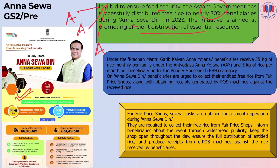Free rice is distributed from 1st to 10th of every month. Under the scheme, 45 kg of rice per month per family is provided. Under the Priority Household category, the entitlement is 5 kg per person per month, and the rice is available from fair price shops free of cost.